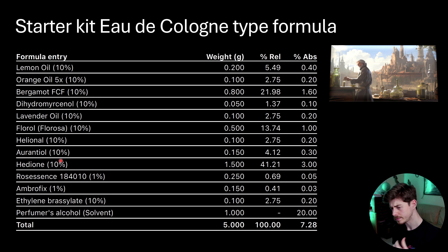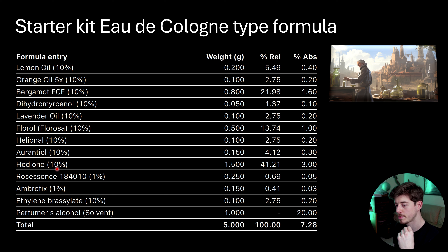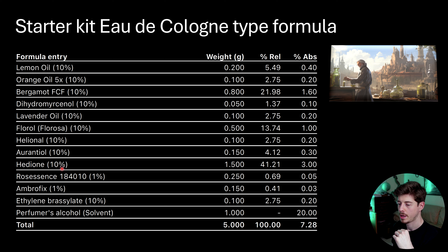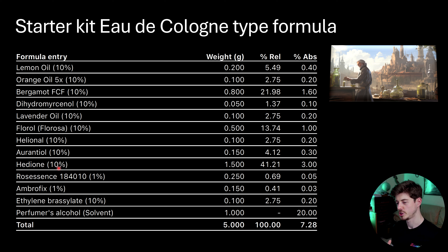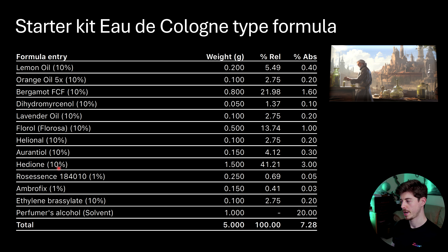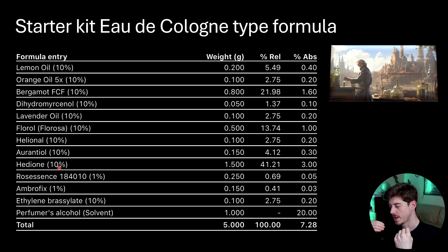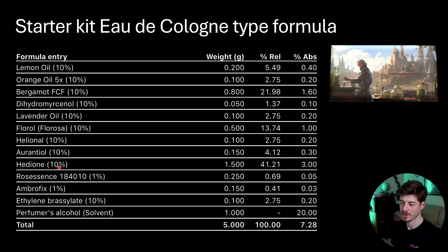Hedion is more of a modern raw material that wouldn't be included in a traditional cologne, but it fits very well — partly because it has a citrus facet. If you don't know the smell of hedion, it's a light diffusive floral note related to some jasmine molecules, but it doesn't distinctly smell of anything in particular — just generally quite light and airy. It's often used in modern perfumes at quite high dosages to help with performance, diffusivity, and giving that soft, expansive aura.